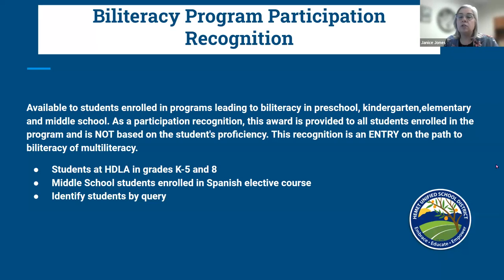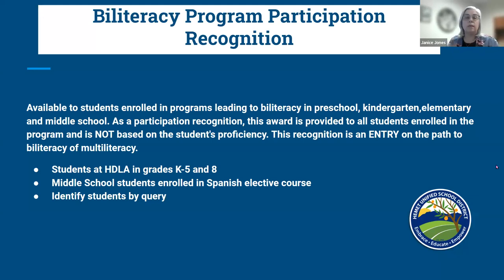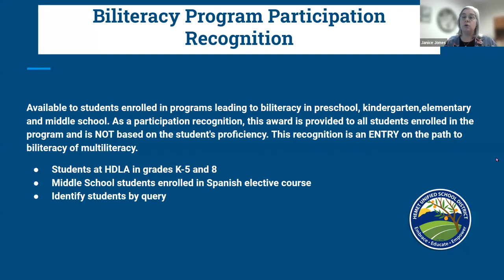The first pathway is the Bi-Literacy Program Participation Recognition. This is available to all students in grades K through 5 who attend our Dual Language Academy, and any student throughout the district in grade 8 enrolled in a Spanish course, because that student is also developing their bi-literacy by learning a second language. This award is provided to all students enrolled in the program and is not based on proficiency — it is a participation recognition.